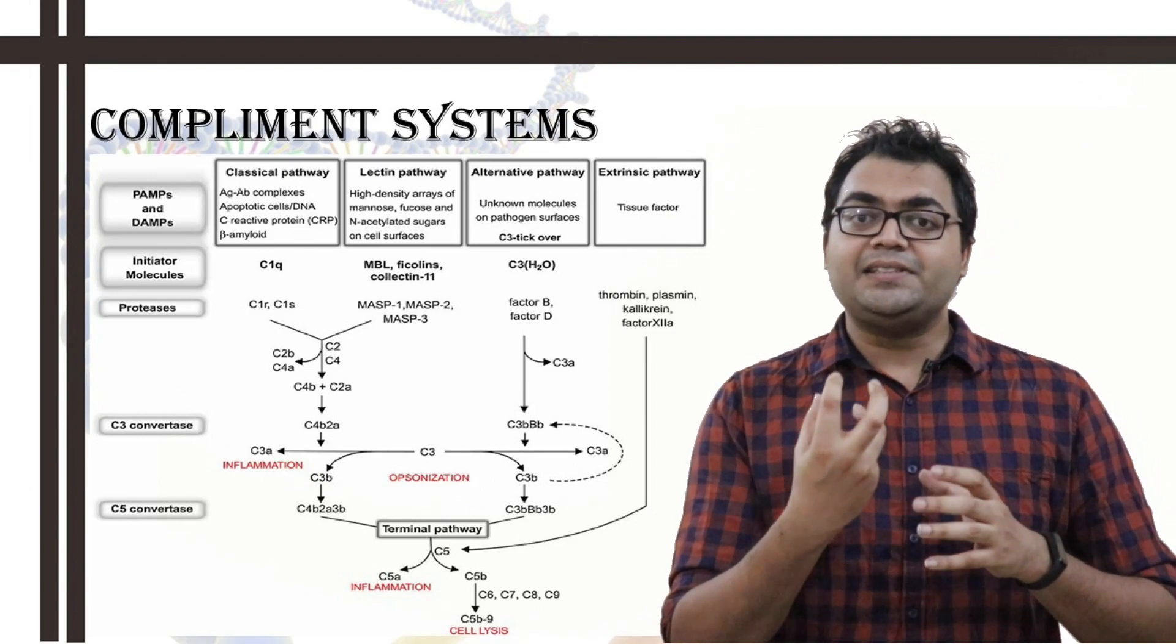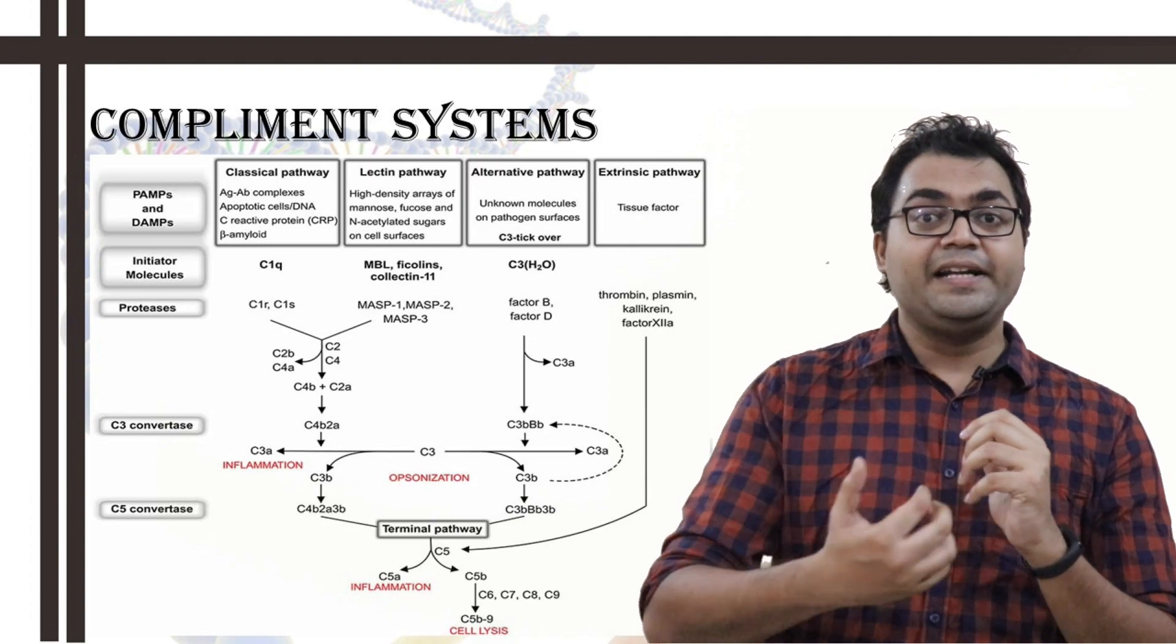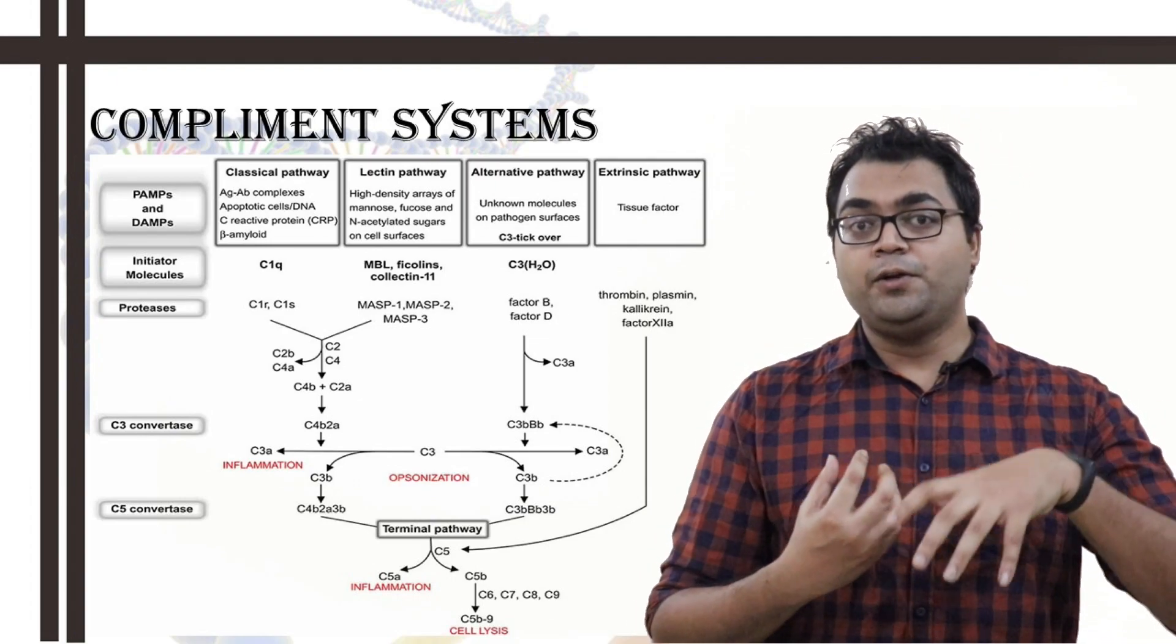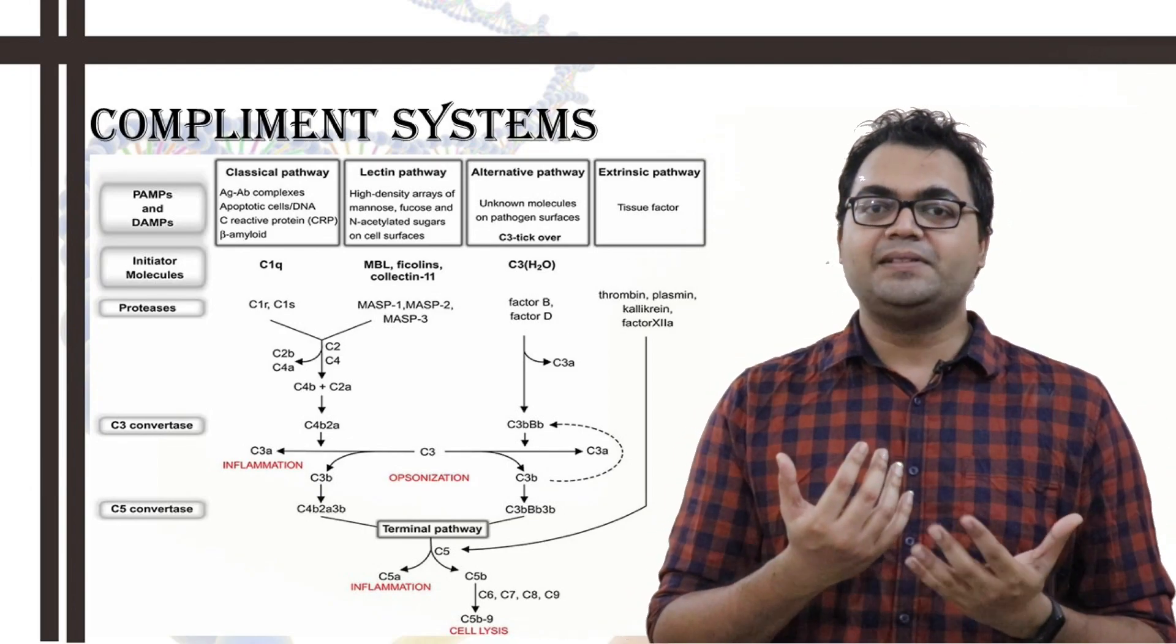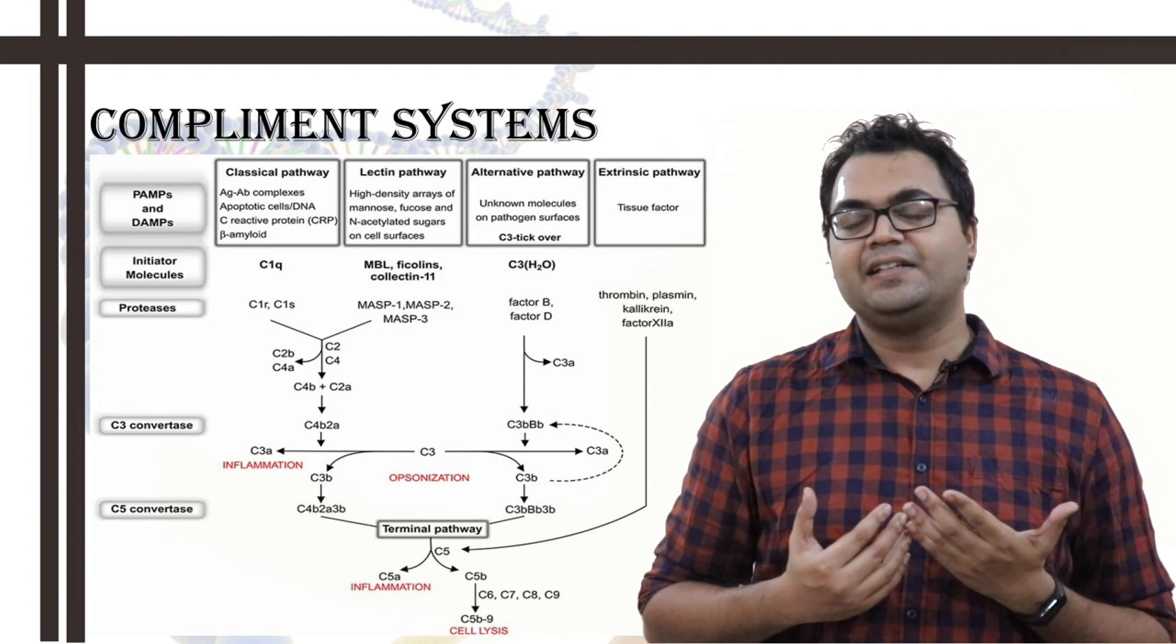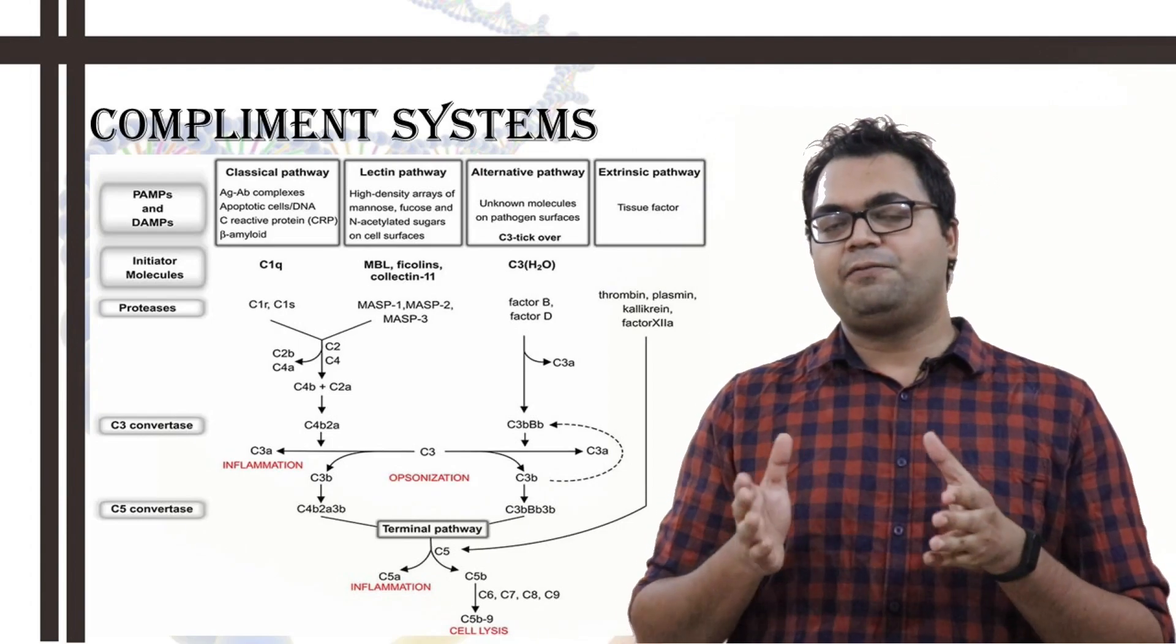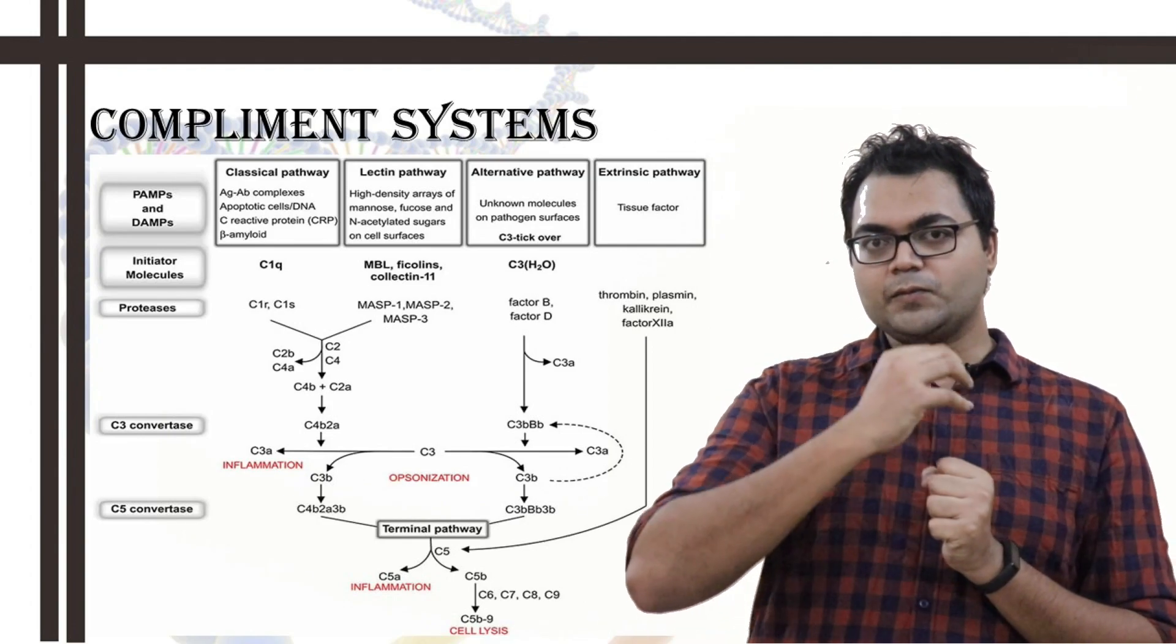So, a part of complement system is extremely important, but in case of SARS-CoV-2, this wreaks havoc because what happens is due to the extreme gathering of the neutrophils or the degranulation pathway, what really happens is the infiltration or the release of a lot of pro-inflammatory cytokines like IL-1, IL-6, IL-8, IL-17, IL-21, TNF-alpha, MIP, MCP, CCL-5, and all. So, it perpetuates ARDS.